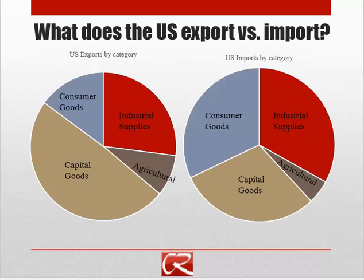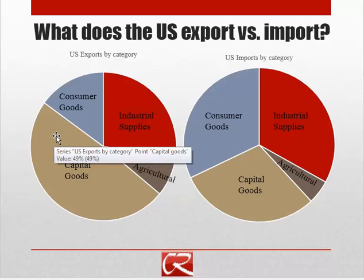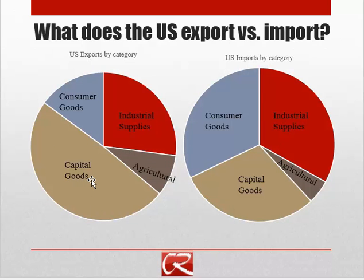People often think that the U.S. doesn't export anything successfully. Part of the reason is that if you look at what we export, we export a lot of capital goods — things that individual households typically don't buy, so we don't think about them. These are things like bulldozers, generators for hydroelectric dams, commercial aircraft, and that sort of thing. We also export a lot of sophisticated intermediate goods.